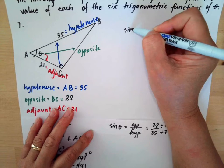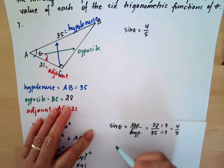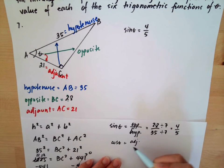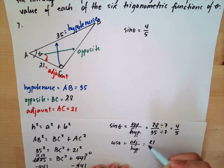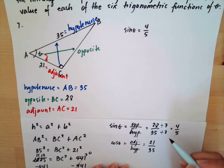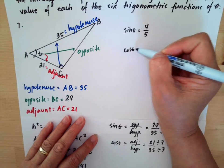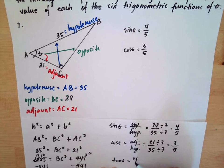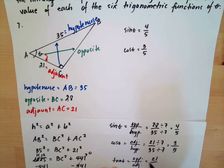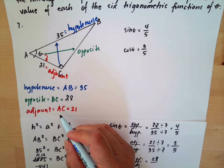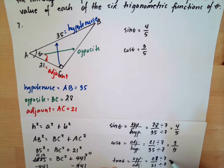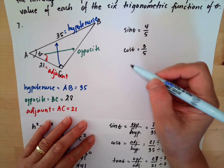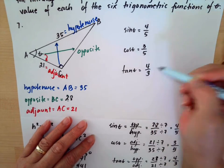Cosine theta equals adjacent over hypotenuse: 21 over 35. Dividing both by 7 gives 3 over 5, so cosine theta equals 3/5. Tangent theta equals opposite over adjacent: 28 over 21. Dividing both by 7 gives 4 over 3, so tangent theta equals 4/3.